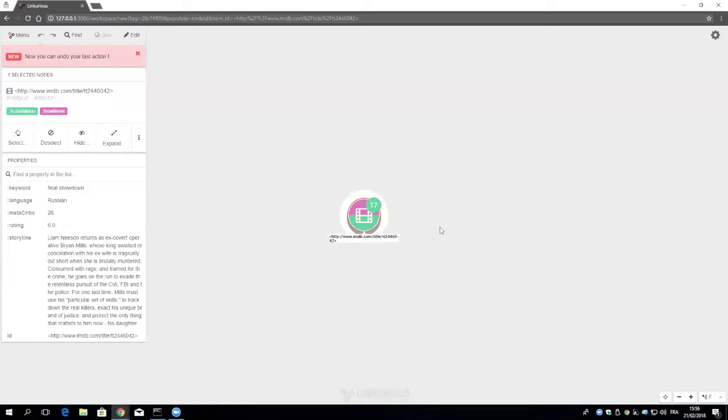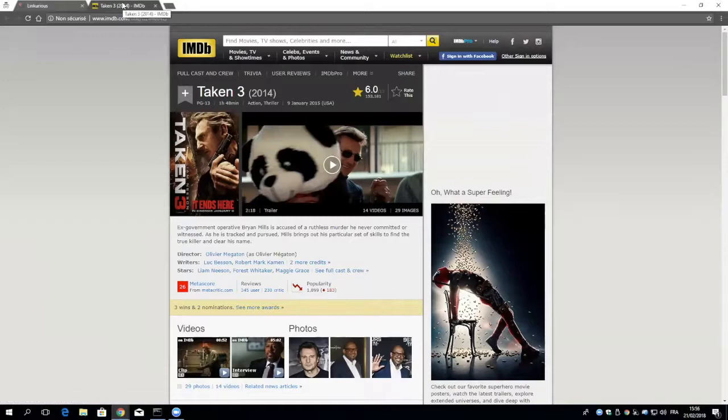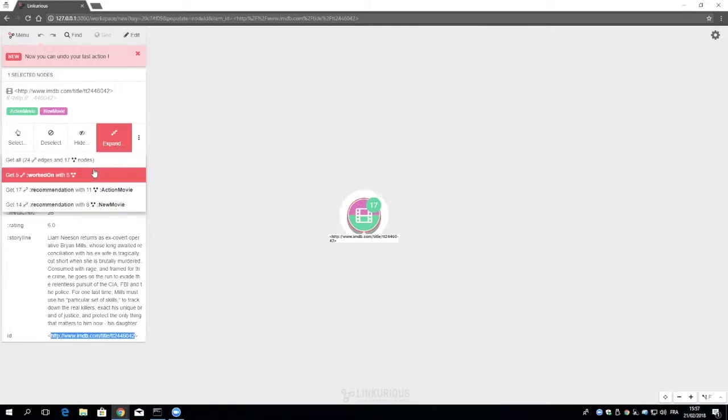I can see my Stardog instance and the settings to connect to it—fairly straightforward. Here's a search bar to look up nodes of interest. We're interested in Liam Neeson, so we're typing the name. We see a few results, including this one that includes the keywords Liam Neeson in the storyline. Let's click on that result. We see a node pop up. When we click on it, we can see detailed information on the left panel—the storyline we looked at. Liam Neeson returns as ex-covert operative Brian Mills. We can look up this URL to see more information online. We can see this is Taken 3.